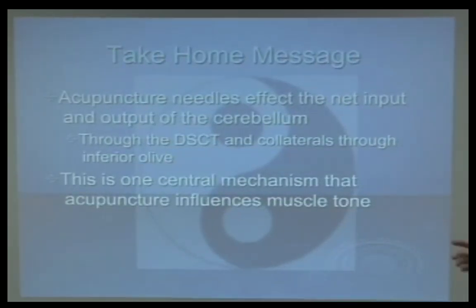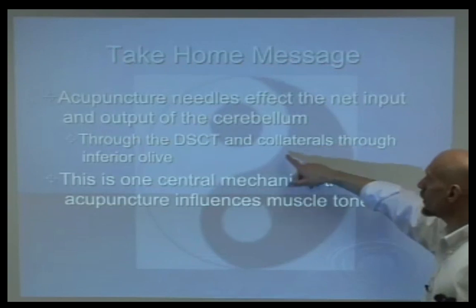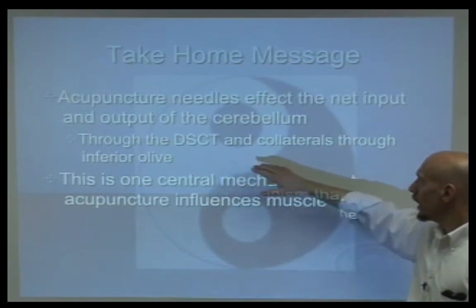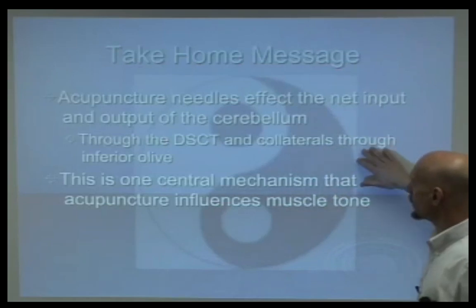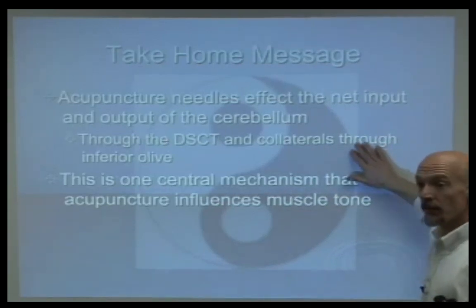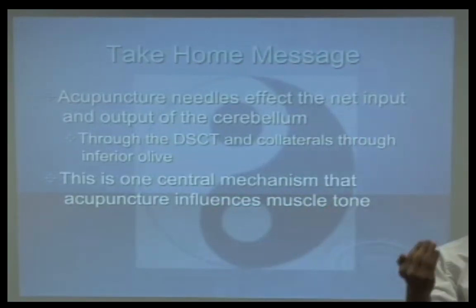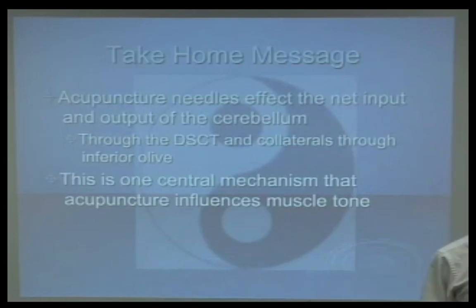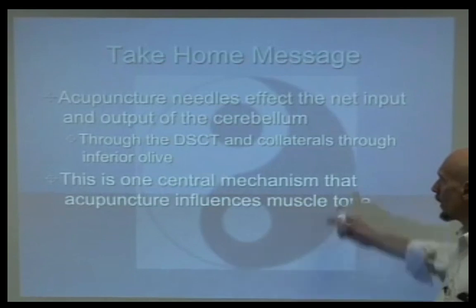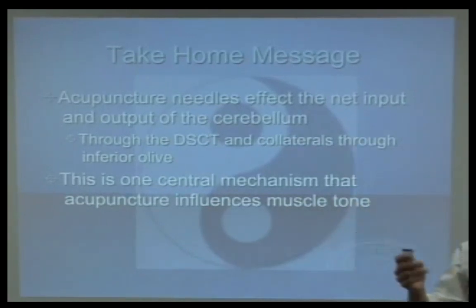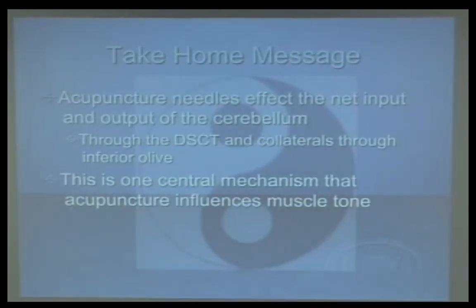Acupuncture does this through the dorsal and ventral spinal cerebellar tracts and collaterals that go through the inferior olive. The inferior olive is a relay nucleus that takes mechanoreceptor information and pumps it back in as a central input — and that's one central mechanism we can influence with acupuncture. So we've got two systems we can manipulate, plus a whole world of others.